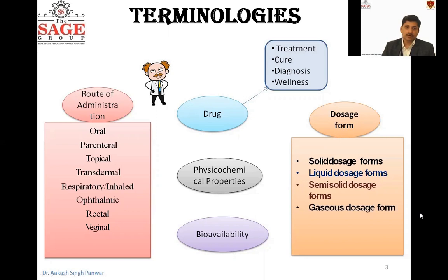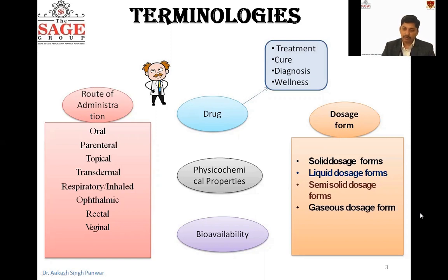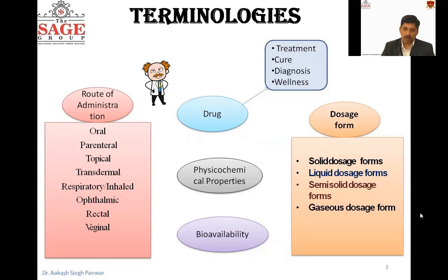The first factor is the route of drug administration. Route of drug administration means the route by which a drug can enter into the body. This includes routes such as oral, parenteral, topical, transdermal, ophthalmic, rectal, etc. These are the routes by which we can deliver the drug into our system or body.